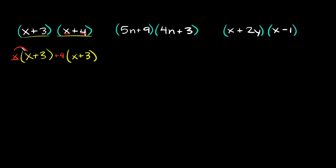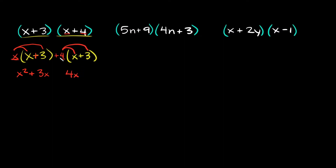Take the x, multiply it by the x, and then by the 3. So x times x is equal to x squared, and then x times 3 is equal to 3x. Since we're adding right here, you just bring that straight down. Then do the same thing over here — we have a 4, so distribute it inside the parentheses: multiply it by the x and then by the 3. So 4 times x is 4x, and 4 times 3 is 12. Since you're adding, bring that straight down.